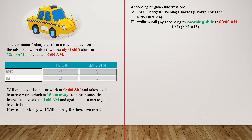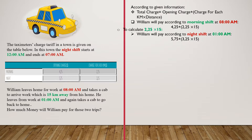At 1 a.m., William will pay according to the night shift. The total charge that William pays for the night trip is 5.75 plus 3.25 multiplied by 15.